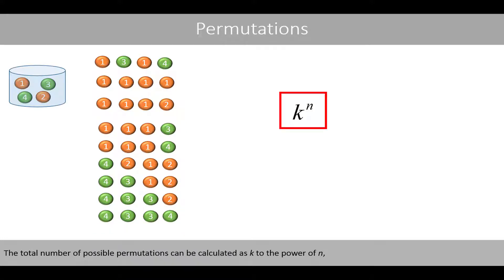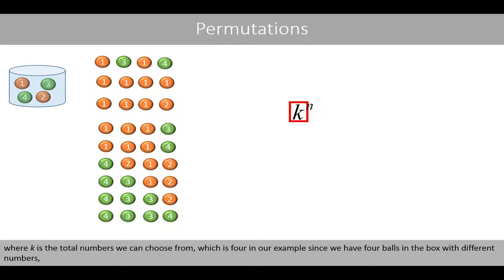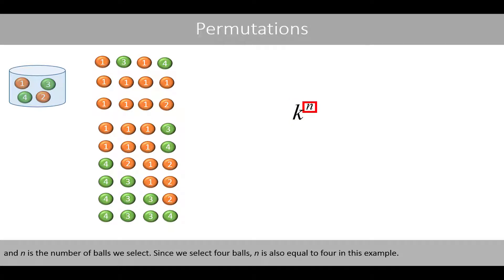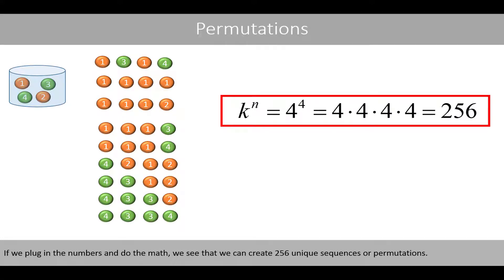The total number of possible permutations can be calculated as k to the power of n, where k is the total number we can choose from — which is 4 in our example since we have 4 balls in the box with different numbers — and n is the number of balls we select, which is also 4 in this example. If we plug in the numbers and do the math, we see that we can create 256 unique sequences or permutations.